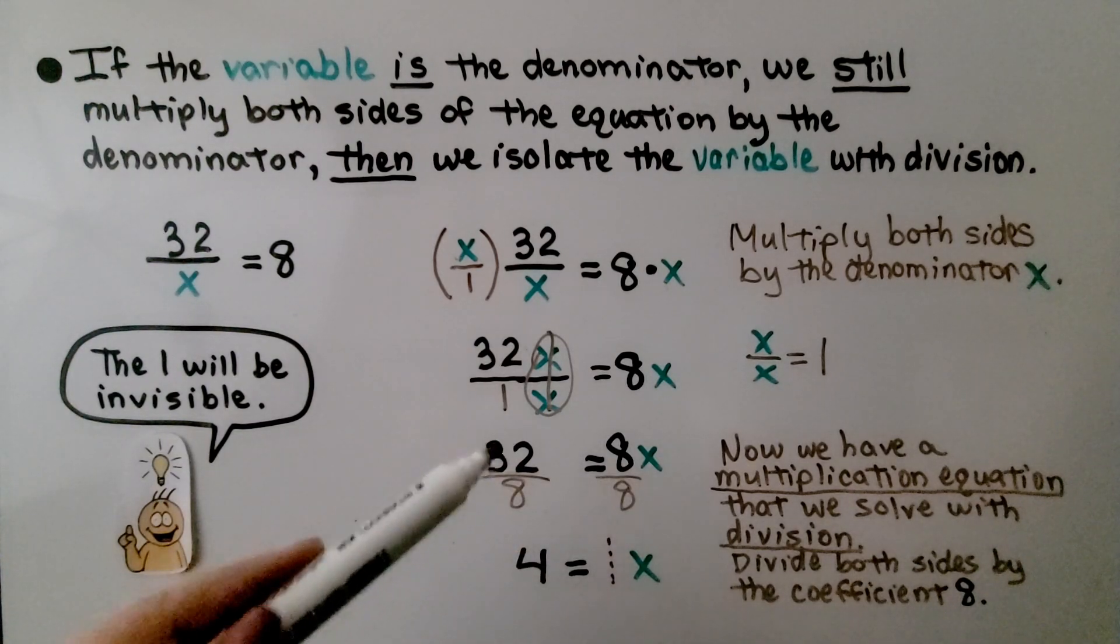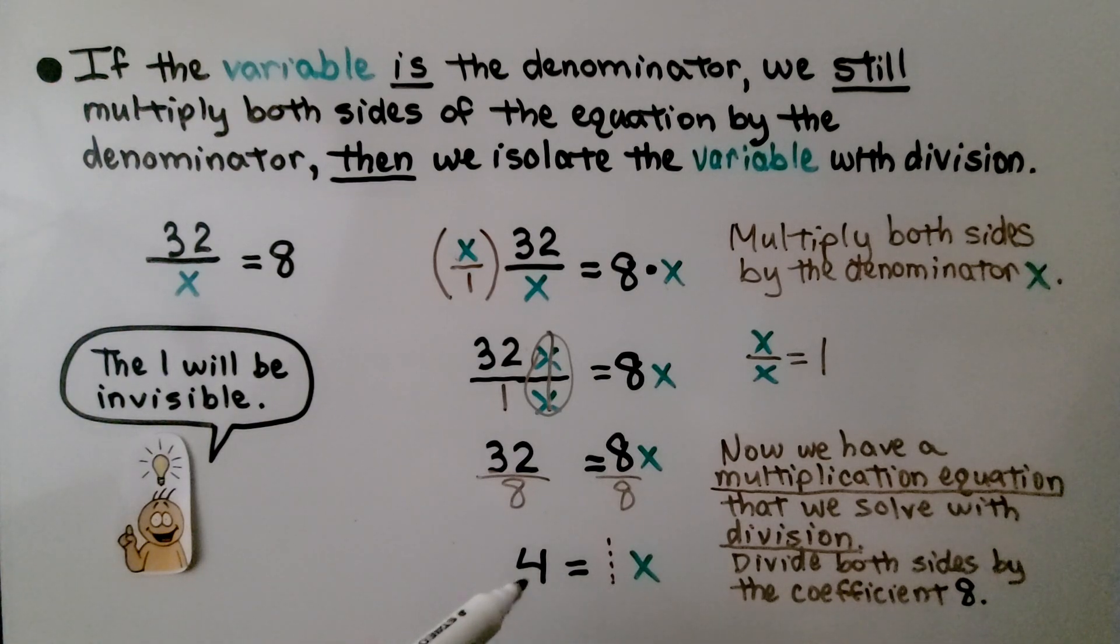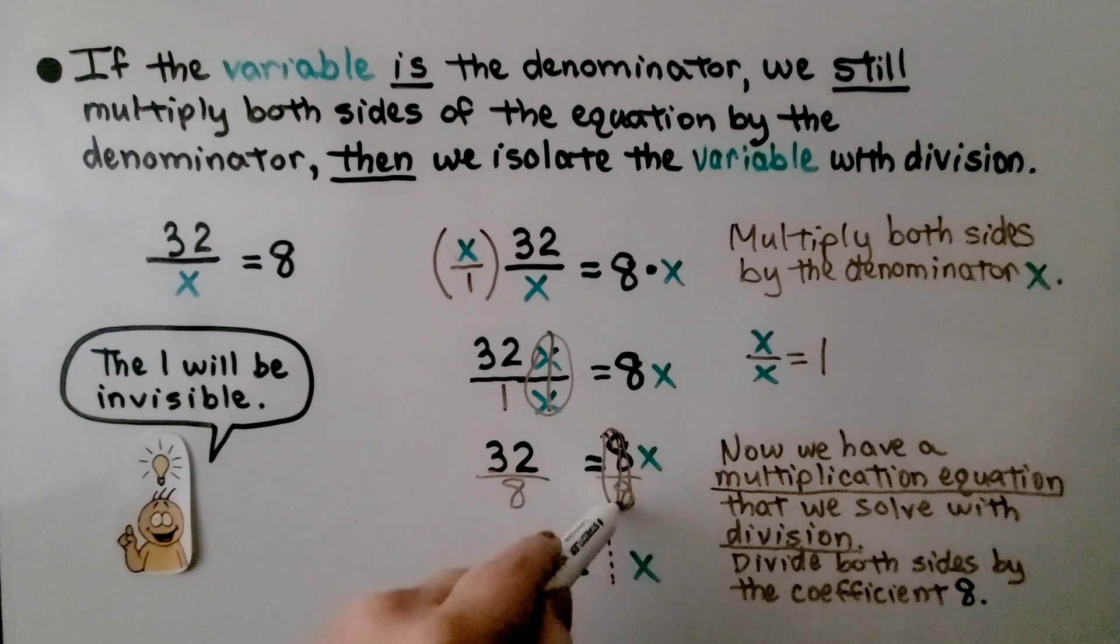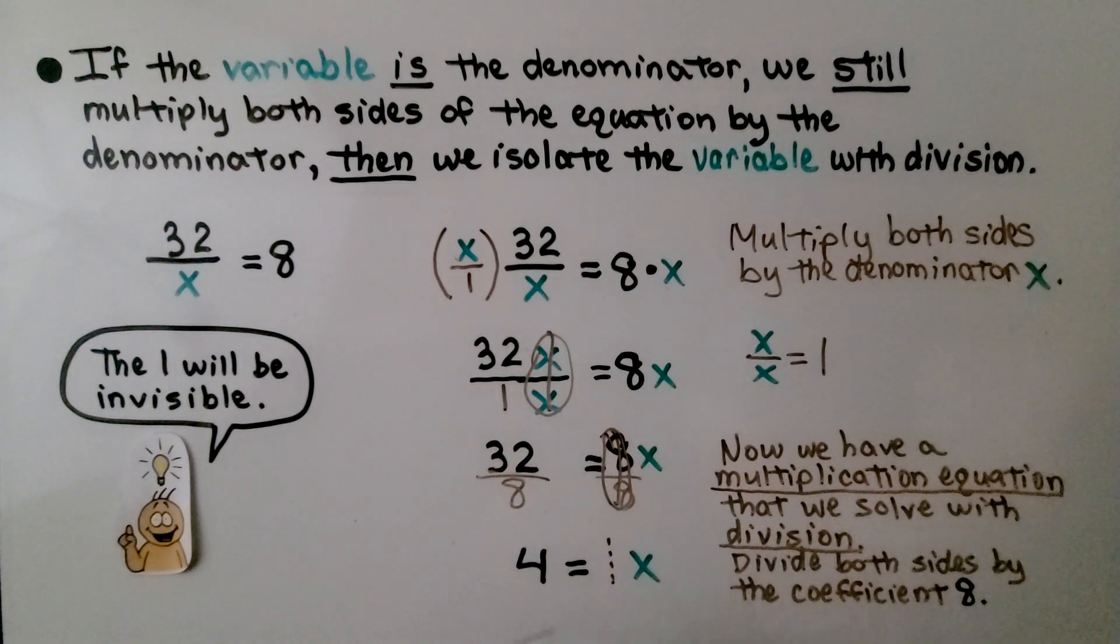And 32 divided by 8 is 4. And 8 over 8 is a 1. So we've got our buddy the 1 here. That makes 1x. But we don't write 1 as a coefficient. We have 4 is equal to x.